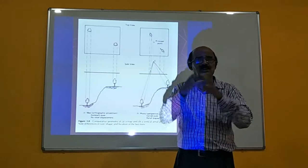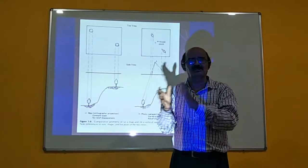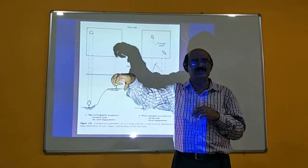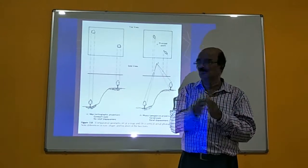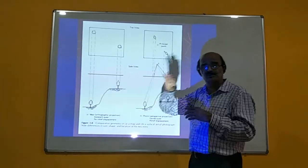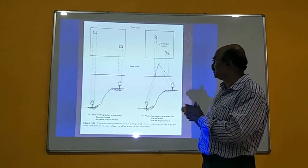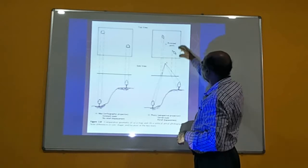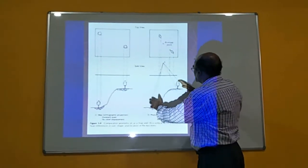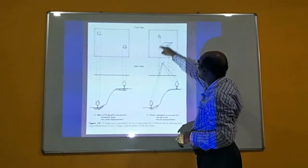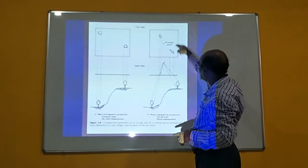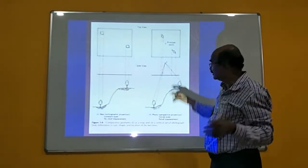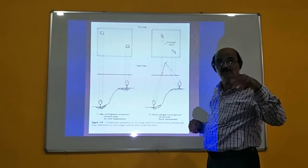When we say 1:50,000, one unit on the map represents 50,000 units on the ground. Aerial photographs show central perspective projection — rays converge at a point through the lens system. That is why aerial photographs are called central perspective projections.